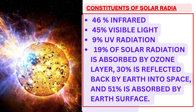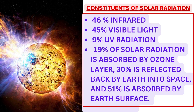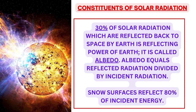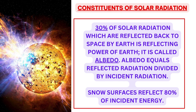Solar radiation consists of 46% infrared, 45% visible light and 9% UV radiation. 19% of solar radiation is absorbed by the ozone layer. 30% is reflected back by earth into space, and 51% is absorbed by the earth surface. The 30% of solar radiation reflected back to space by earth is called the reflecting power of earth — and that is what is called albedo. Albedo equals reflected radiation divided by incident radiation. Snow surfaces reflect 80% of incident energy.